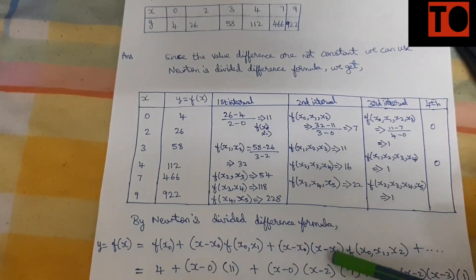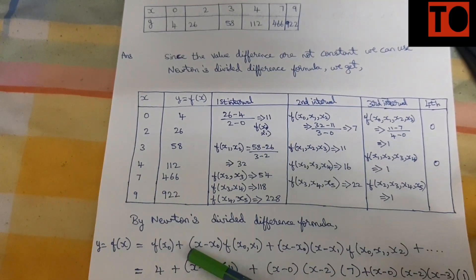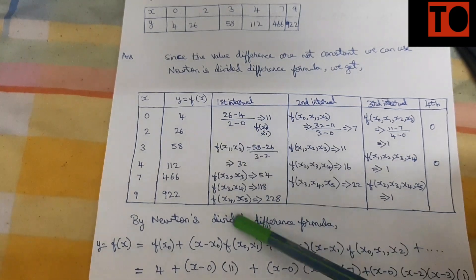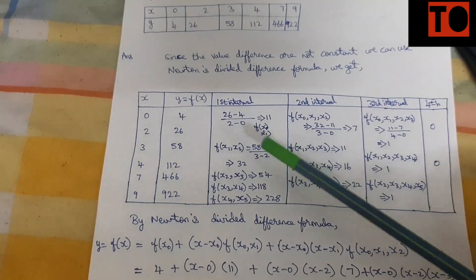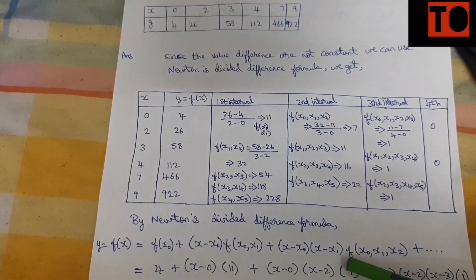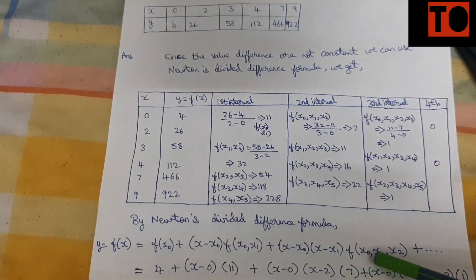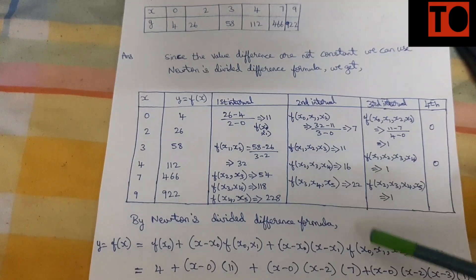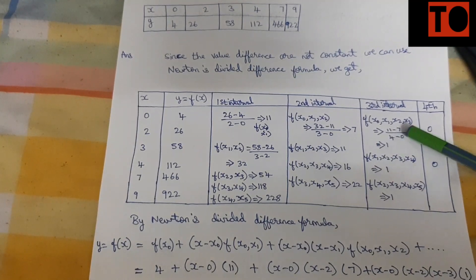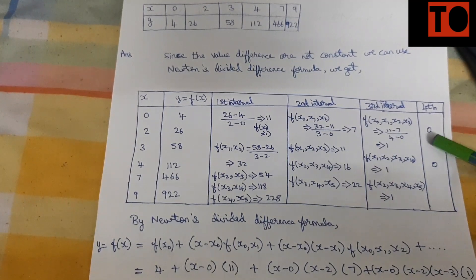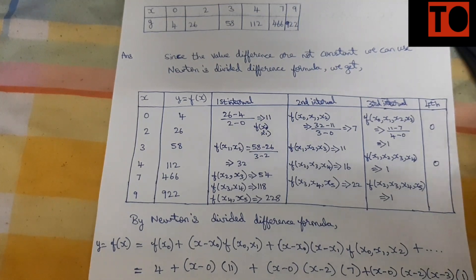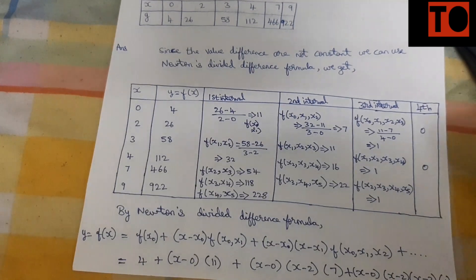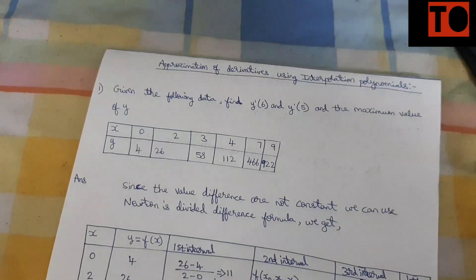Now write the values from the table. F(x0) is 4. F(x0, x1) is 11. F(x0, x1, x2) is 7. F(x0, x1, x2, x3) is 1. Then substitute the x value and the two x values in brackets to set up y and y dash.